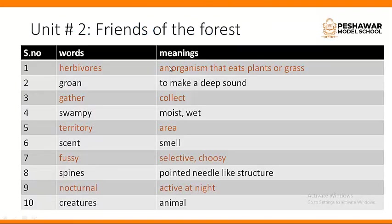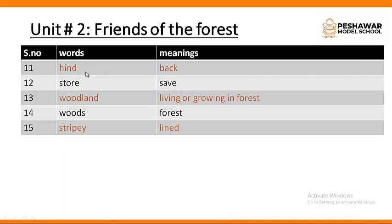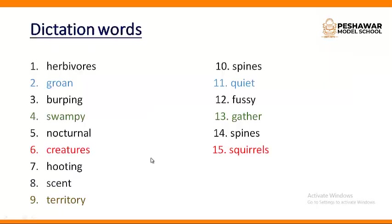Here are some word meanings: Herbivores — an organism that eats plants or grass. Groan — to make a deep sound, or Dakar in Urdu. Gather — collect. Swampy — moist or wet. Territory — area. Scent — smell. Fussy — selective or choosy. Spines — pointed needle-like structure. Nocturnal — active at night. Creatures — animal. Hind legs — back legs. Store — to save. Woodland — living or growing in a forest. Stripey — line.